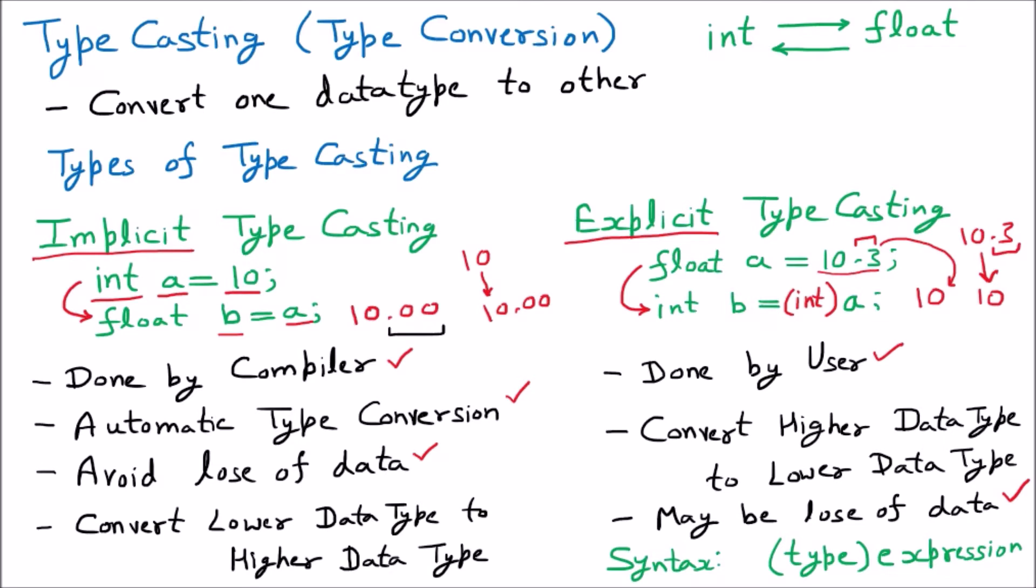Because if I convert 10.00 to 10, then there is no loss of data again. The float is converted to integer, so that's why 'may' is mentioned - it is not strictly loss of data.